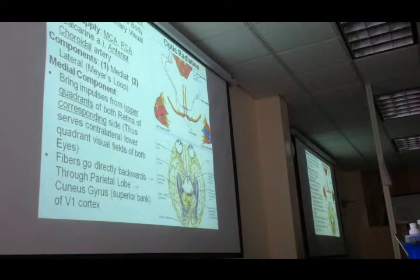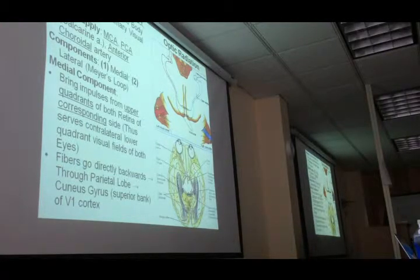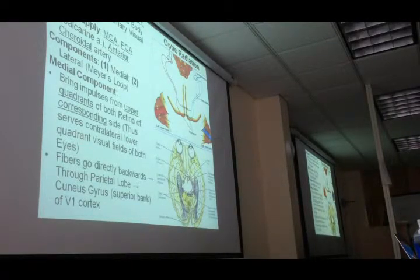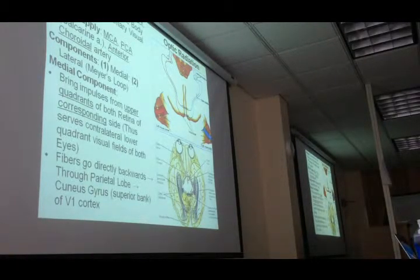Before starting with optic radiation, let's recall something significant about the optic tract. Each optic tract receives fibers from that side of all the retina. The right optic tract receives fibers from the right half of the right retina and the right half of the left retina. Likewise, the left optic tract receives fibers from the left half of the left retina and the left half of the right retina. So each optic tract receives fibers from that half of both retinas.